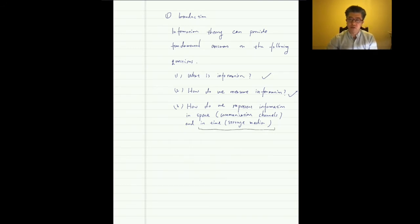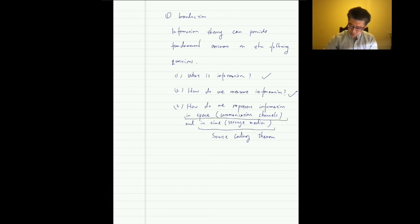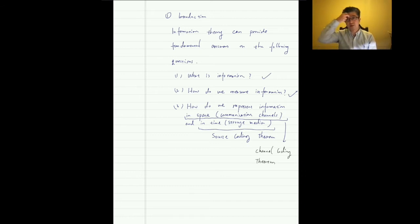In information-theoretic terms, representing information in time corresponds to the source coding theorem — a big part of our class. Representing information in space — how we can transmit information efficiently — corresponds to the channel coding theorem, another important part of our class.